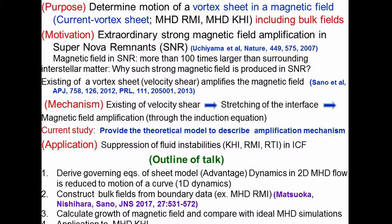The outline of the talk is as follows. First, we derive governing equations of the sheet model, which is a theoretical model of a vortex sheet. The advantage of this sheet model is that the dynamics in two-dimensional MHD flow is reduced to the motion of a curve — one-dimensional dynamics. Second, we construct bulk fields from the boundary data. We take MHD Richtmyer-Meshkov instability as an example, calculate the growth of the magnetic field, and compare with ideal MHD simulations. Finally, we apply the theory to MHD Kelvin-Helmholtz instability.